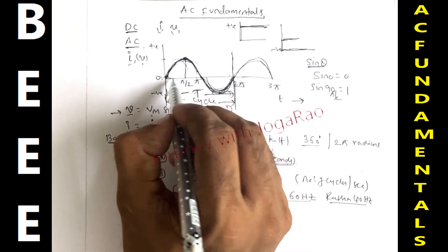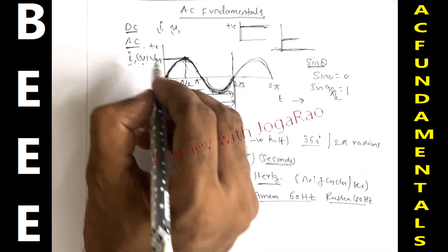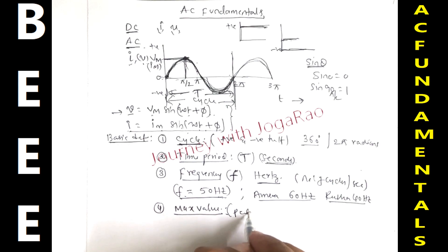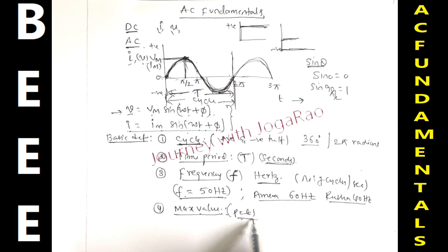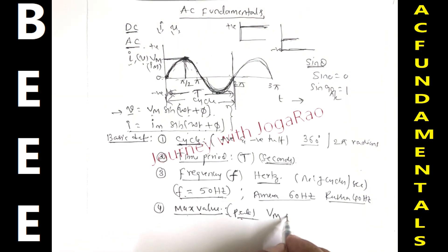Number four is maximum value. If we observe this waveform, the maximum is VM for voltage, IM for current. It is peak value. The maximum value attained by an alternating quantity, either in positive or negative direction, is called peak value or maximum value of an alternating quantity.